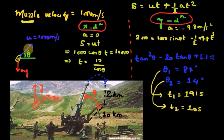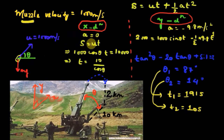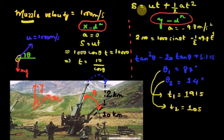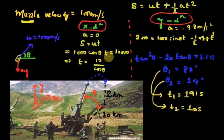From the free body diagram, the initial velocity is 1000 m/s at an angle theta from the horizontal. We split the motion into horizontal and vertical directions and analyze them separately. In the horizontal direction, using the kinematic equation s = ut + ½at², since there is no force acting horizontally the acceleration is zero, so s = ut. The horizontal distance s is 10,000 meters, and the initial horizontal velocity is u·cos(theta) = 1000·cos(theta), giving t = 10/cos(theta) seconds.